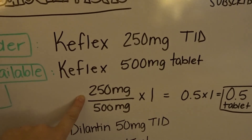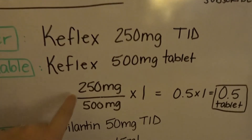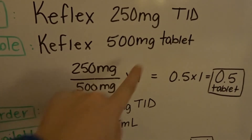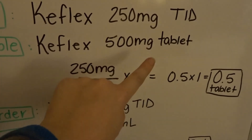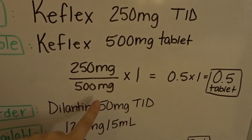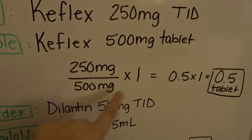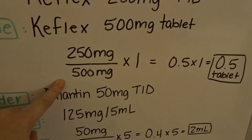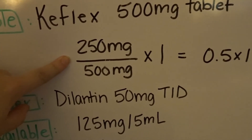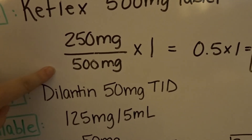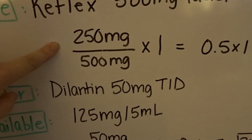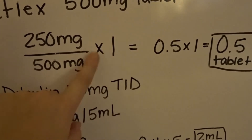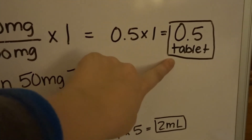250 milligrams is our order — that's what the provider ordered — over 500 milligrams, which is what is available. It's available in tablet form, so one tablet is 500 milligrams, so that's times one. First we're going to do 250 divided by 500. The most common mistake is doing 500 divided by 250 instead — it does matter. So 250 divided by 500 equals 0.5, times one, meaning you're going to be giving half a tablet.